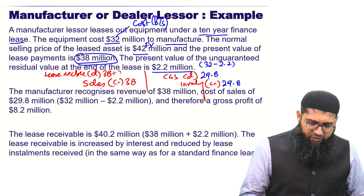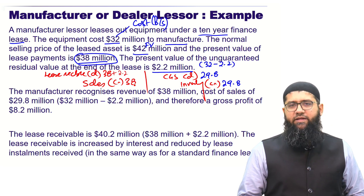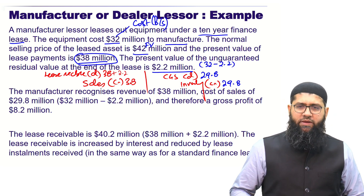For the lease receivable, the $2.2 million present value of the unguaranteed residual value would also be included in the lease receivable balance.